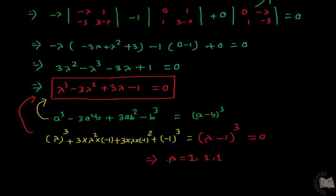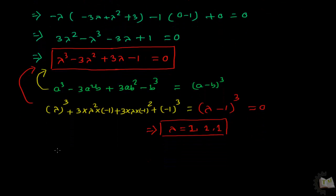Lambda has 3 values: 1, 1, 1 - three repeating values. We can write the characteristic polynomial as (lambda minus 1) to the power 3.